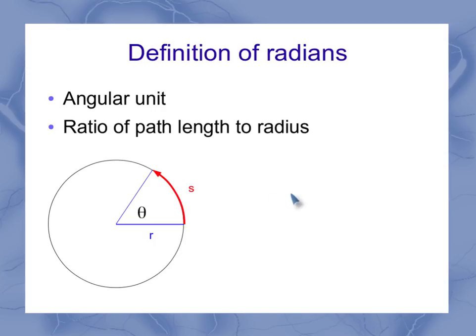The path length is shown here in red as s, and my radius from the center out to the edge is shown here in blue as r. Putting this into an equation, what it says is that my angle in radians, theta, is equal to the ratio of s to r, the path length to the radius.